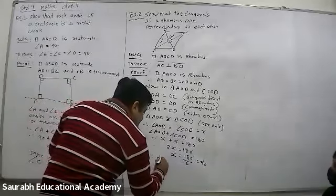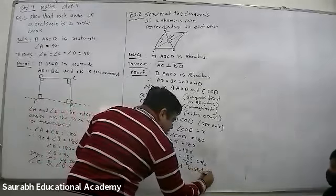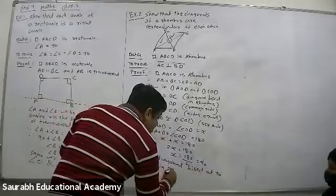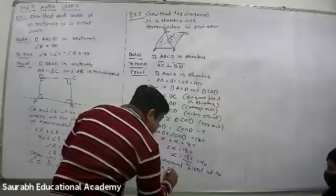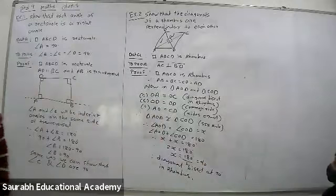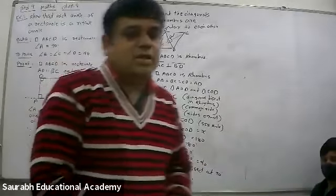Therefore, diagonals bisect at 90 in rhombus. Right? Diagonals bisect at 90 in rhombus. Clear?